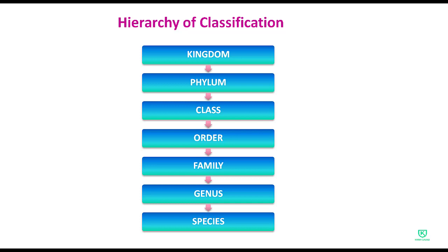Now let's look at the hierarchy of classification. For a simple example, consider: cell, then tissues, then organ, then organ system, then the whole human body. The most basic unit is the cell. A group of cells with a common function forms tissues, then organ, then organ system, and finally the whole body — the human body. The classification hierarchy works in the same way.